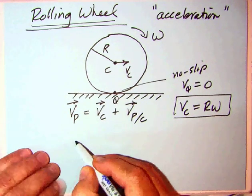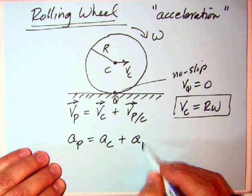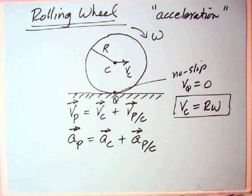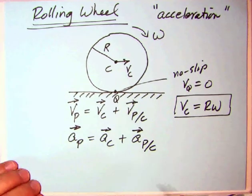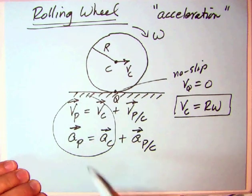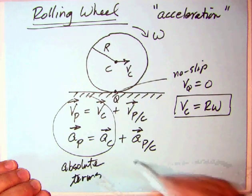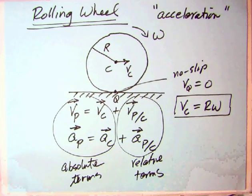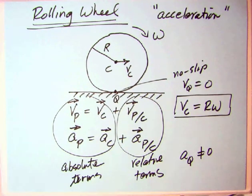Now we can write down a similar relative motion equation in acceleration. Acceleration of P equals the acceleration of C plus the acceleration of P relative to C as if C is fixed. This had just one term for velocity, but this has two terms, and we're going to see that on the next page. The first two terms are the absolute terms and these are the relative terms.